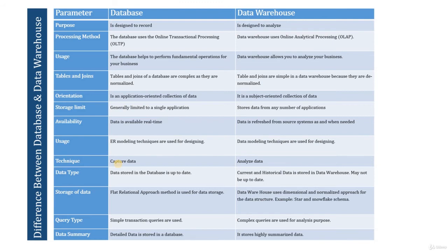The next parameter is query type. Simple transactional queries are used in database — operations use simple queries such as read, update, delete, drop, etc. In data warehouse, complex queries are used for analysis purposes — queries range from relatively complex to highly complex since multiple tables are joined while reporting data on BI tools.